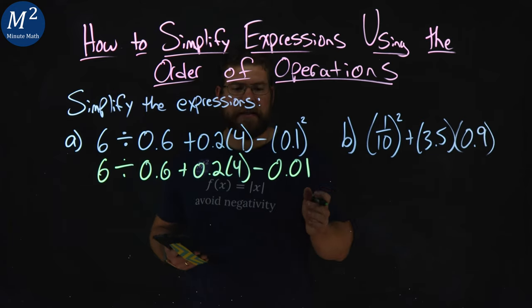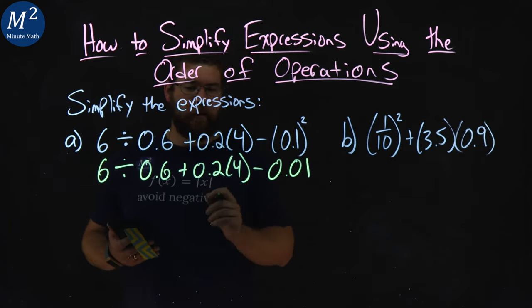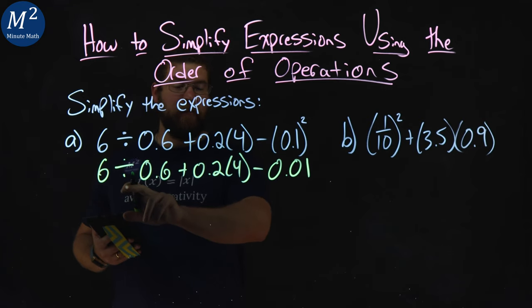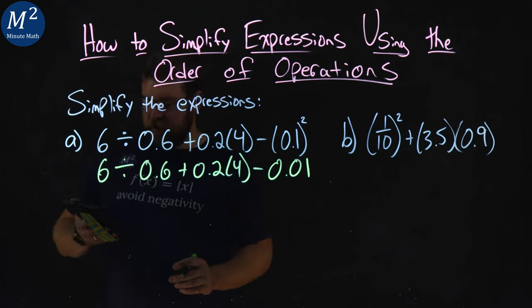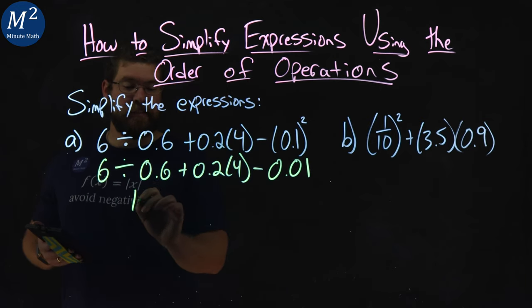From there, my next operation I see is division multiplication of the same classification, and we read left to right there. So division comes first before this multiplication. 6 divided by 0.6 is just 10.